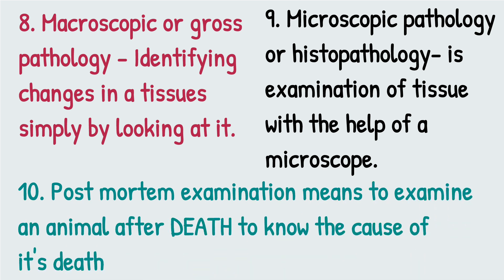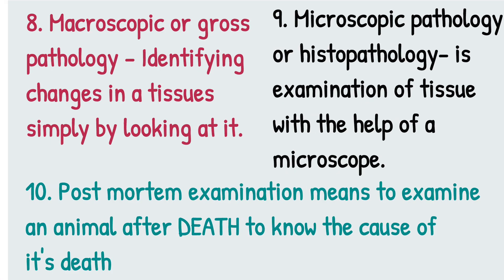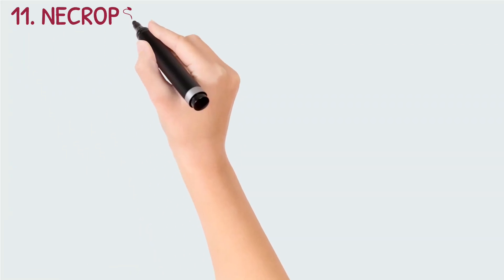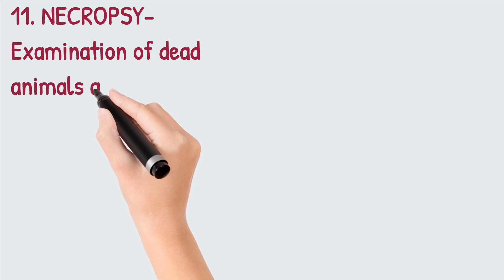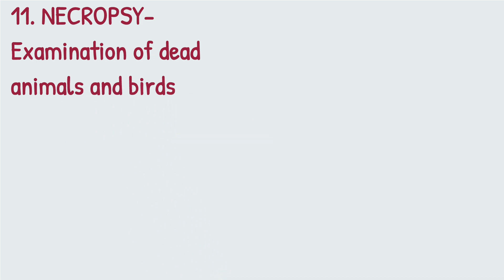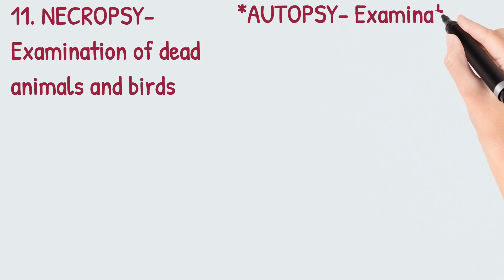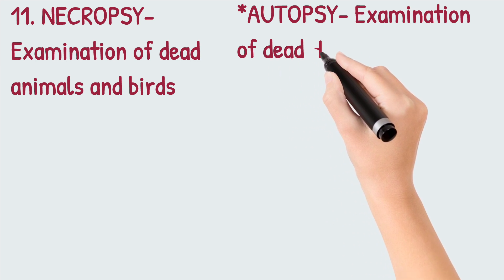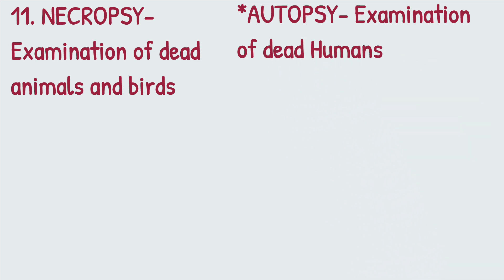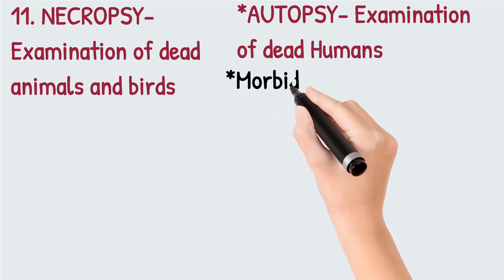Number ten is post-mortem examination, which is the examination of an animal body after its death to determine the cause of death. Post-mortem examination of dead animals is called necropsy, while post-mortem examination of dead humans is called autopsy. Changes found in the tissues of a dead animal during necropsy are called morbid changes — they are not called lesions; they are called morbid changes.